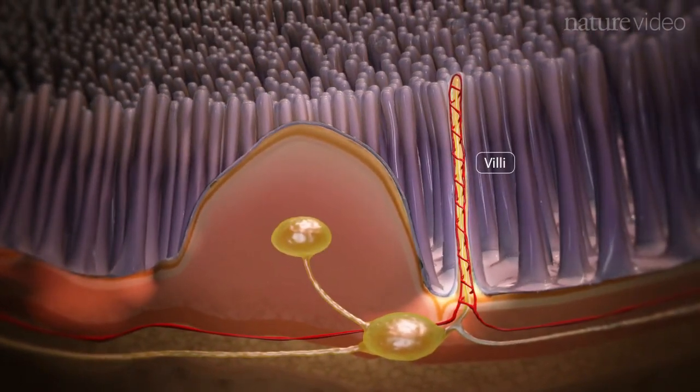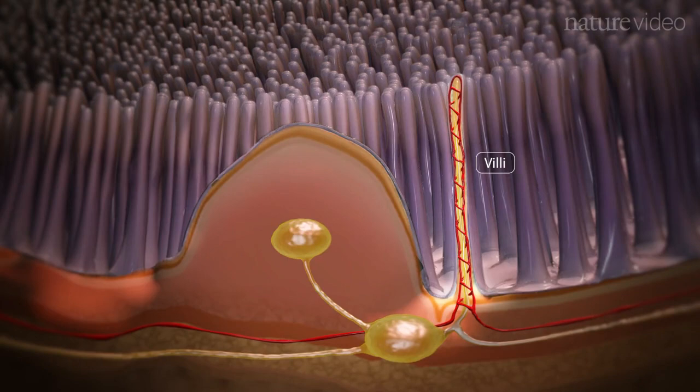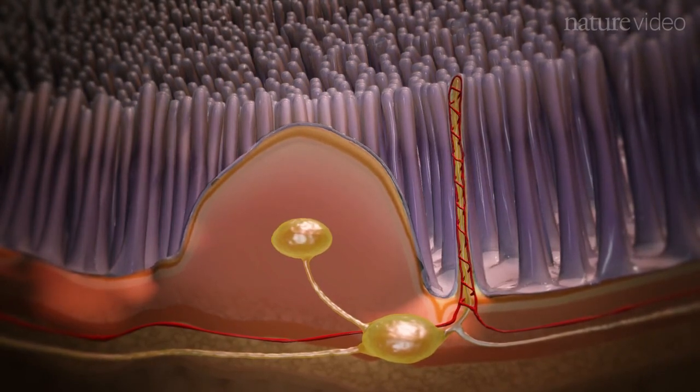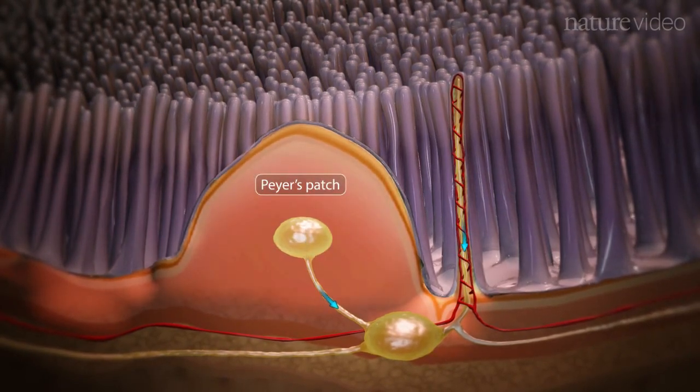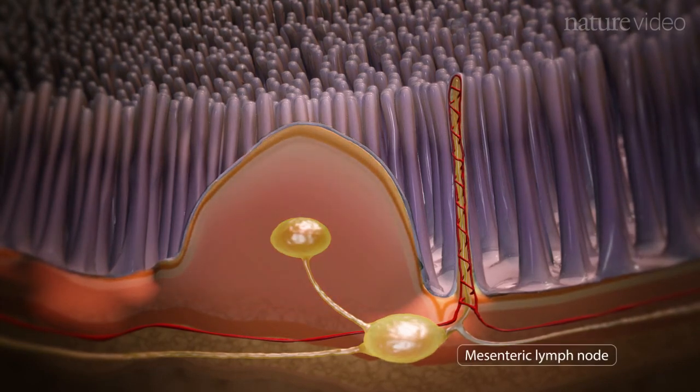The villi contain a network of blood vessels to transport nutrients from food to the rest of the body. Lymphatics from both Peyer's patches and villi drain into the mesenteric lymph node.